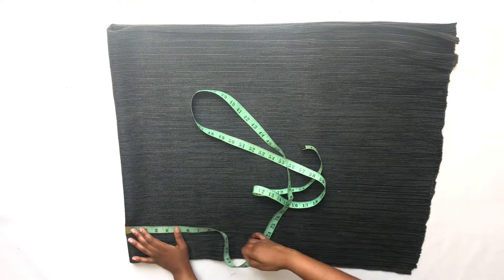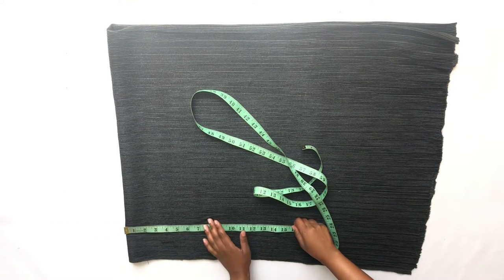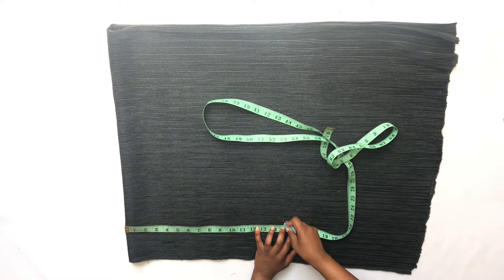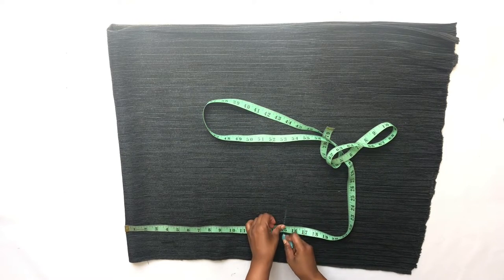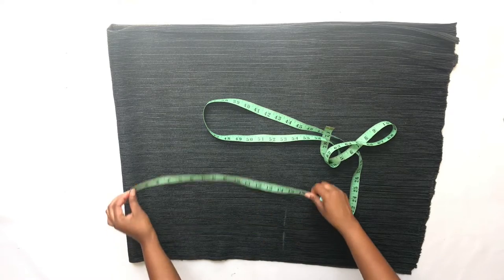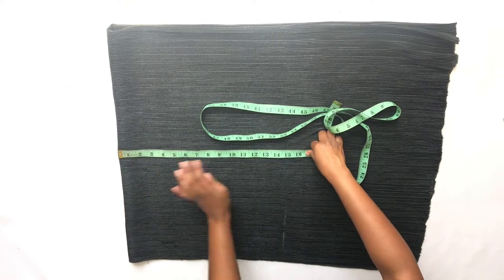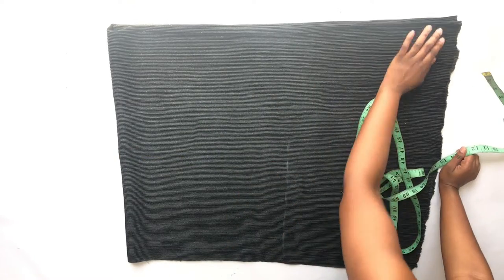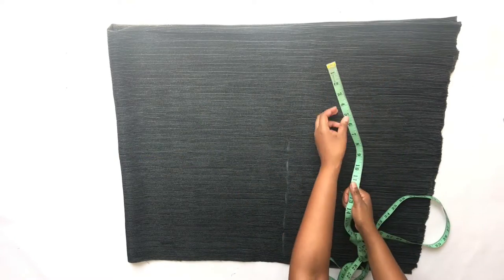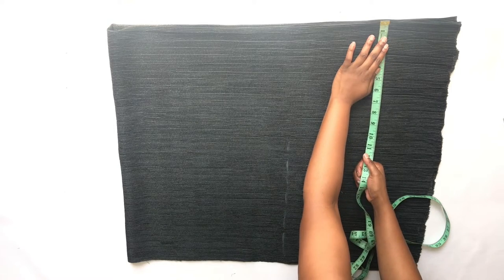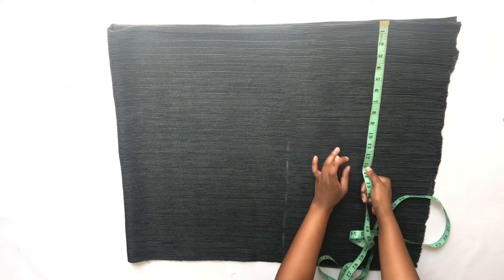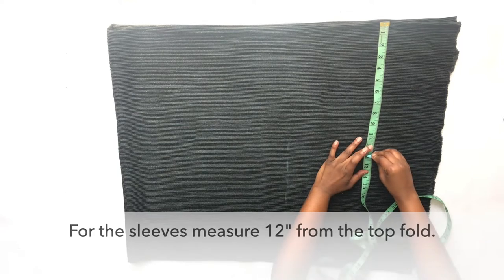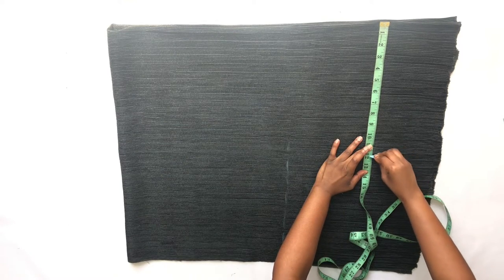For the waist measurements, you will measure 14 inches from the fold into the center. For the sleeve measurements, you will measure 12 inches from the top towards the bottom of the fabric.